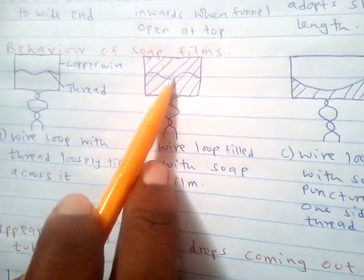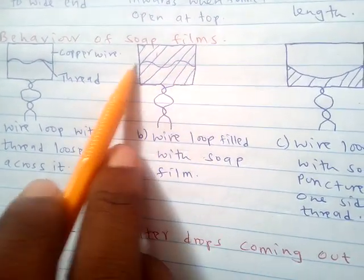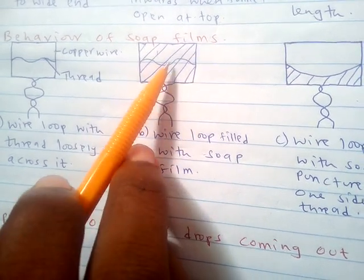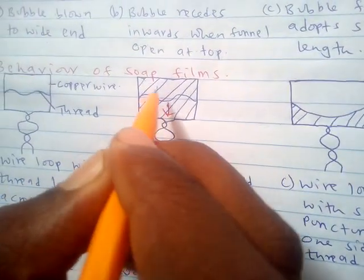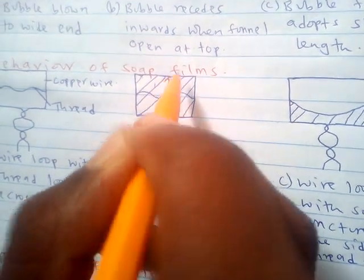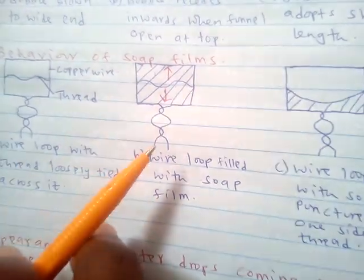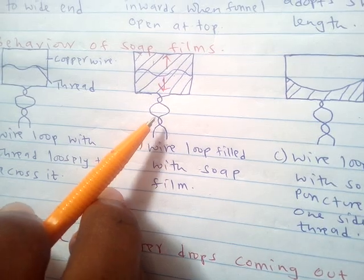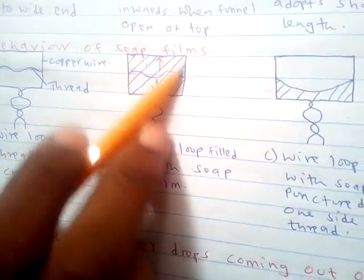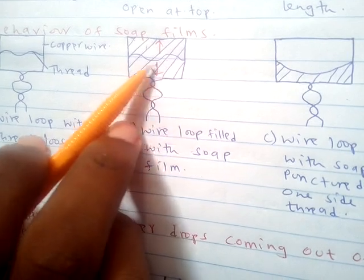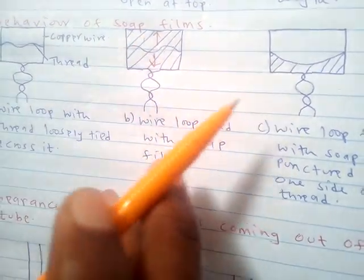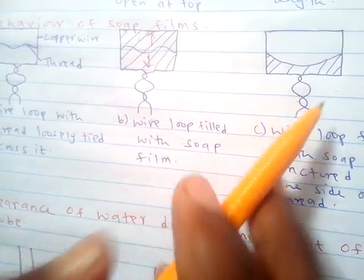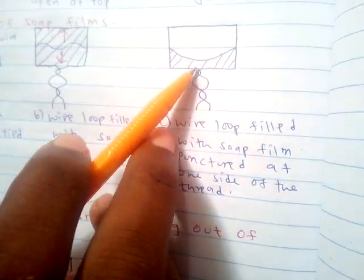In this case, the thread appears settled at the middle because it is acted upon by equal surface tension forces from both sides. The surface tension acting from the thread downward is balanced with the surface tension acting from the thread upward, so the thread remains at rest due to the equal surface tension in the soap film.